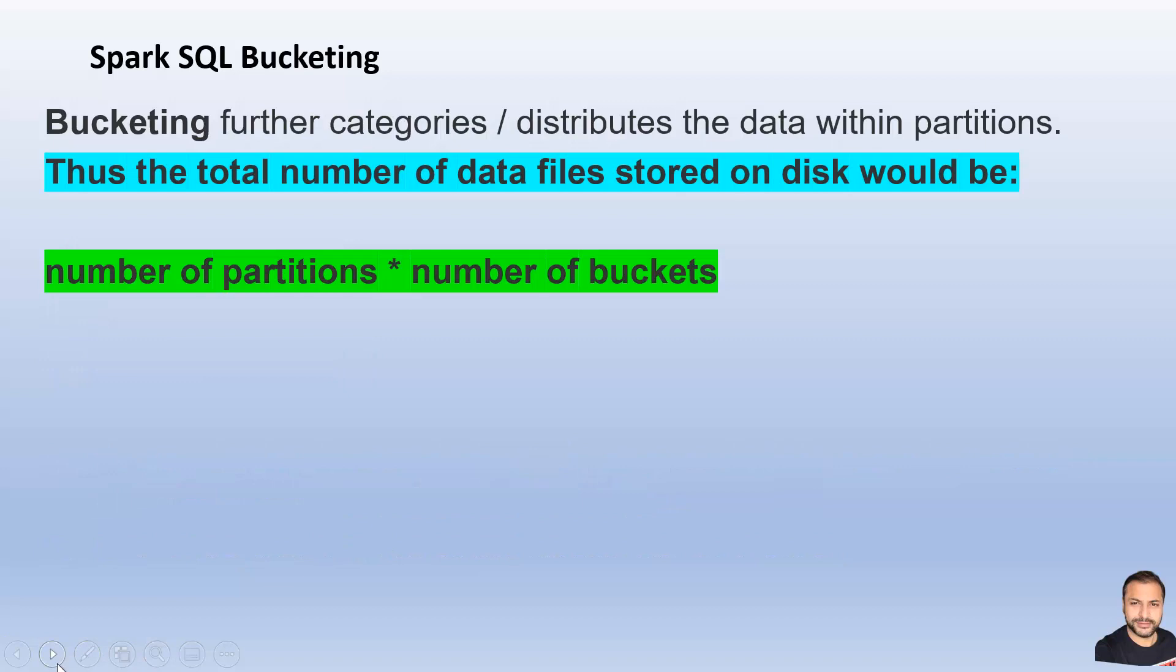One quick thing I want to highlight: if you already have n number of partitions and on top of that you create m number of buckets, eventually the number of part files created for your bucketed table would be n cross m. We'll quickly verify this from the Spark UI.